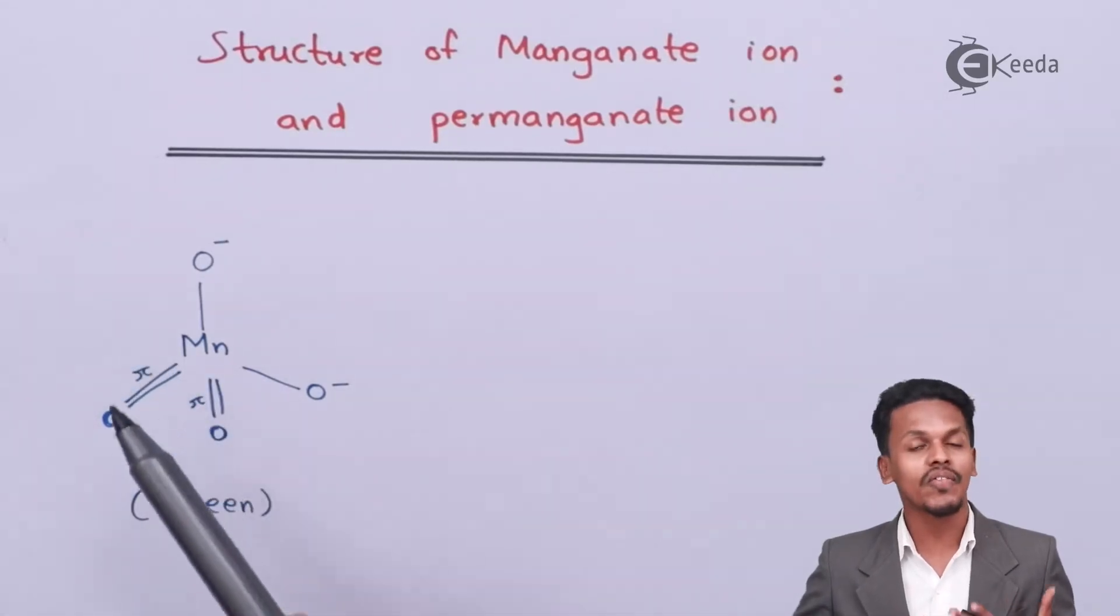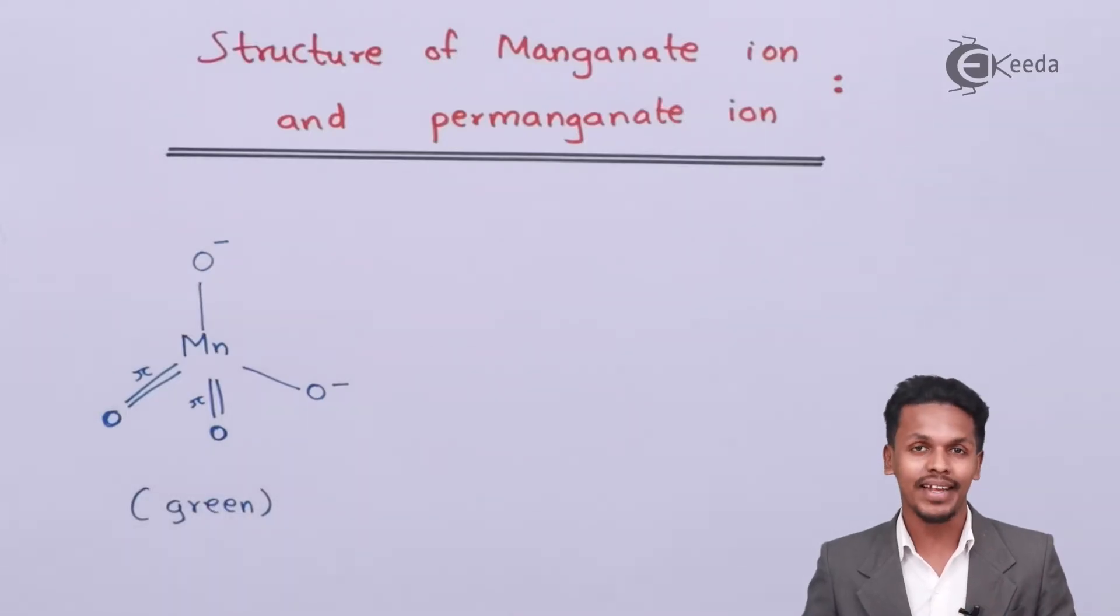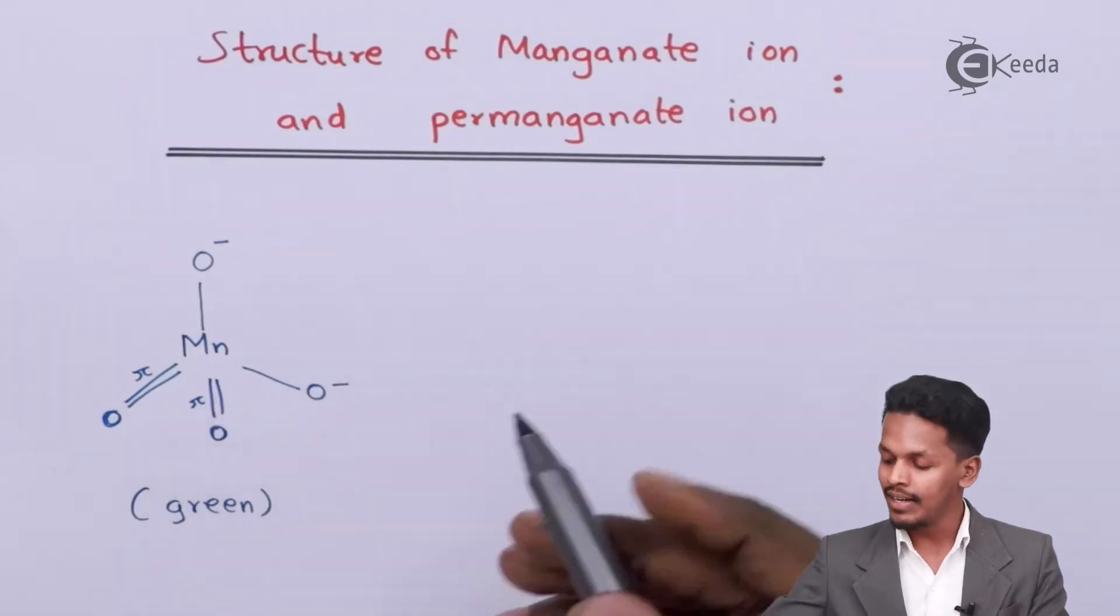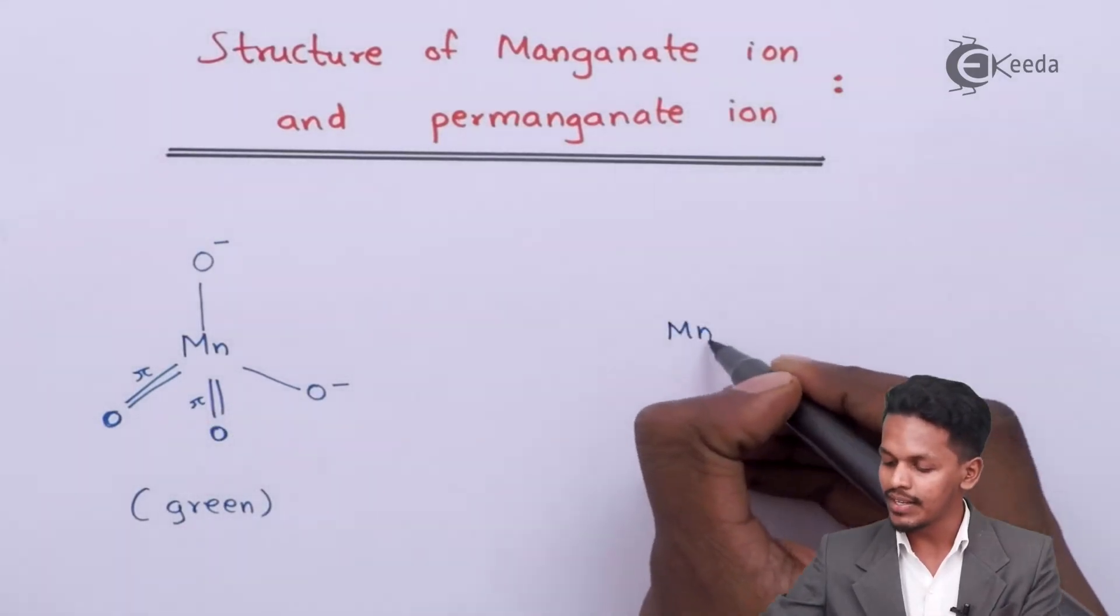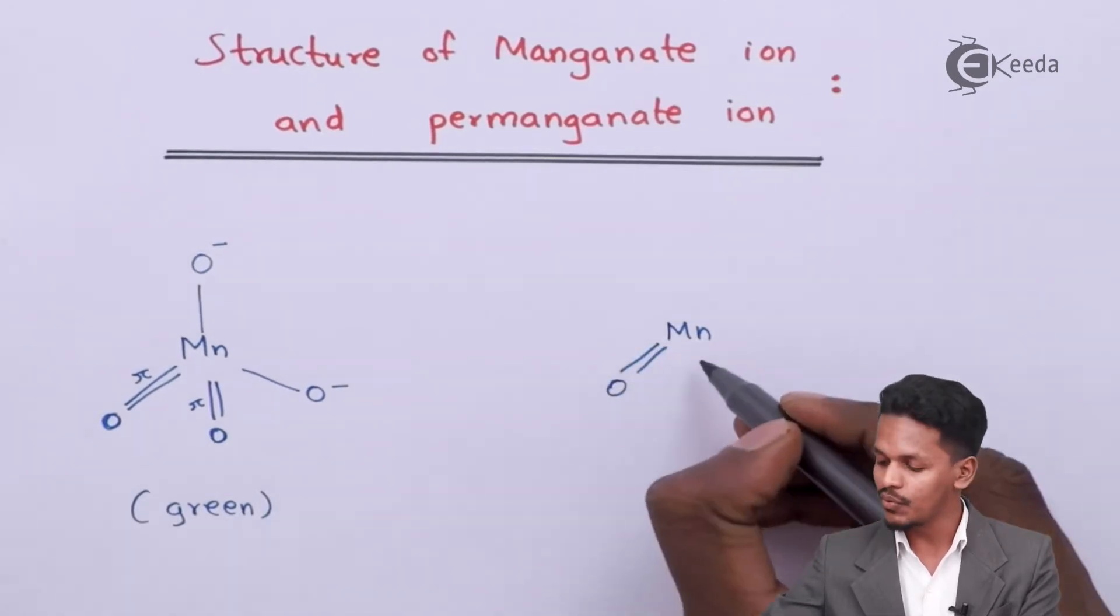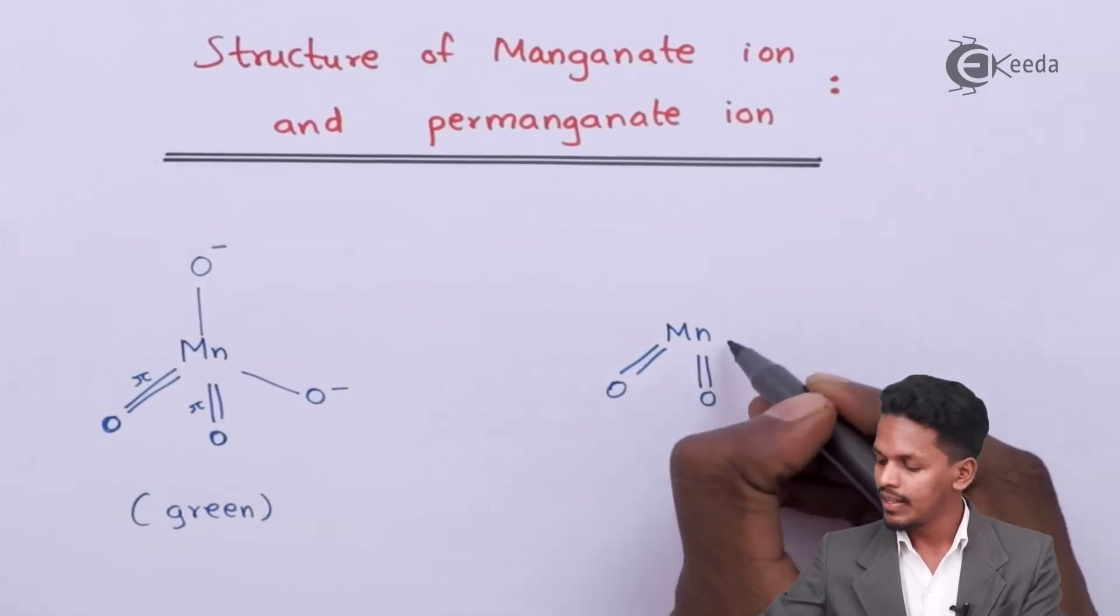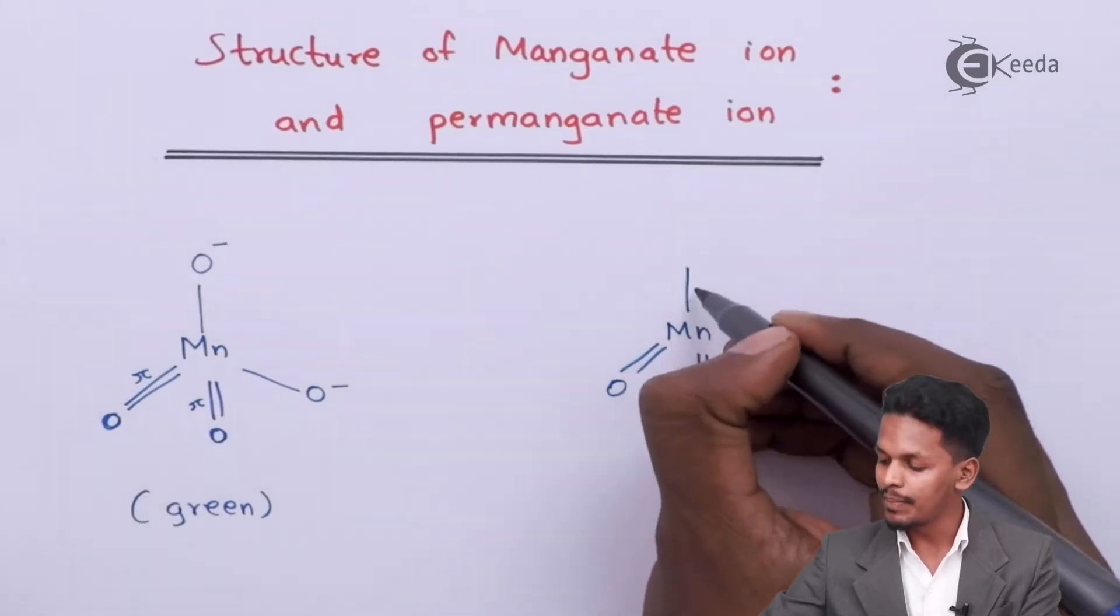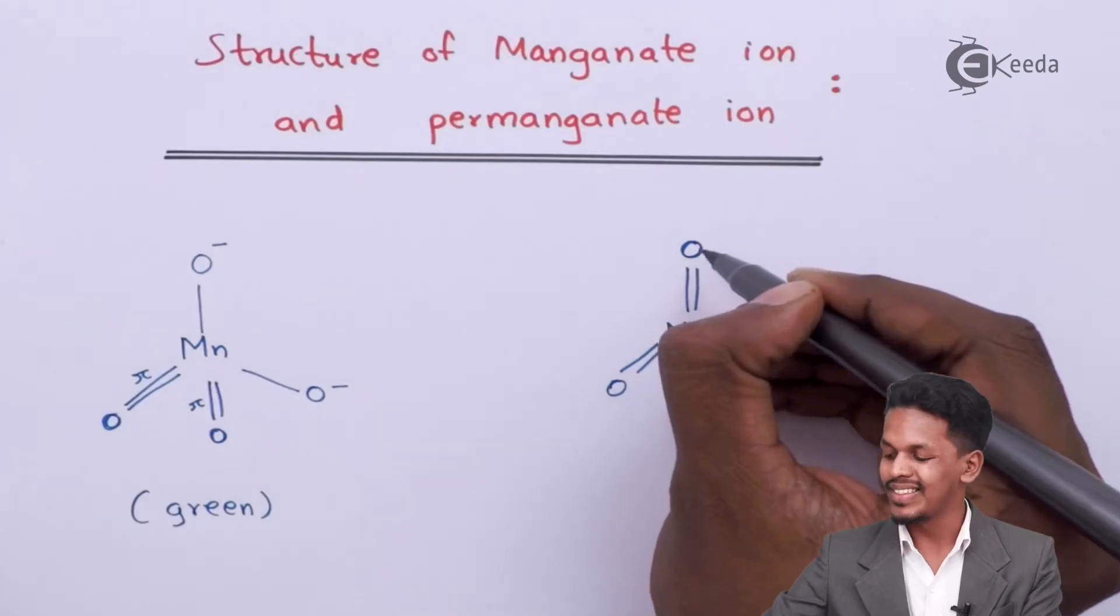This is the structure of the manganate ion. Now let me discuss the structure of permanganate ion. In this case, it is very similar to the manganate ion. The only difference is this is double bond oxygen, here it will be oxygen which will be single bonded, and here there will be a double bond with this oxygen atom.